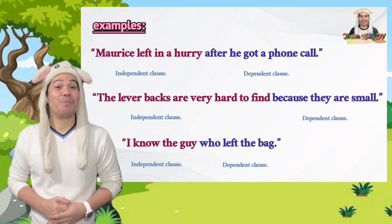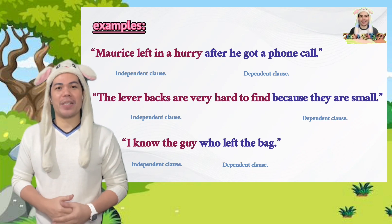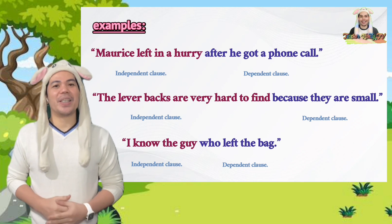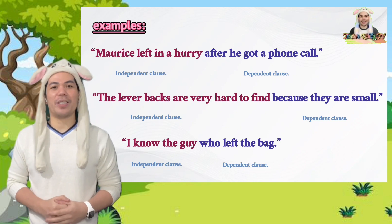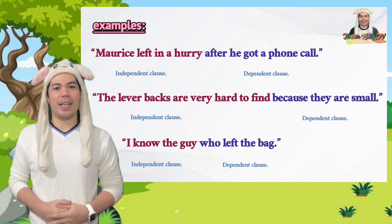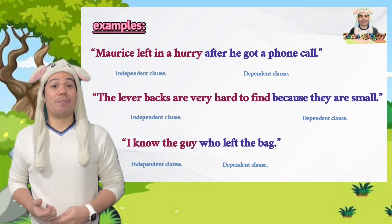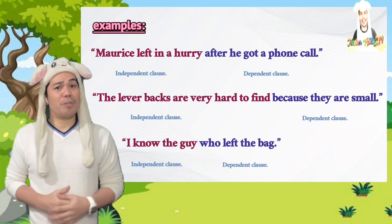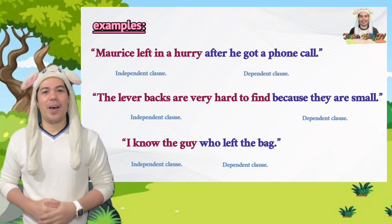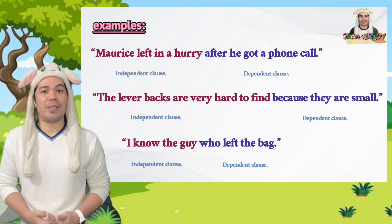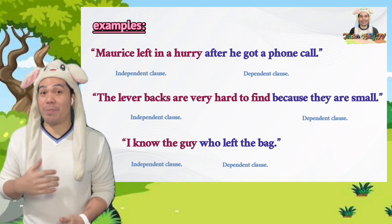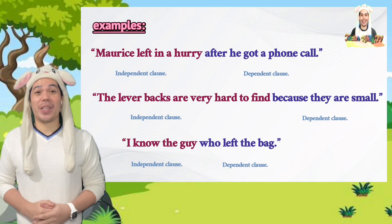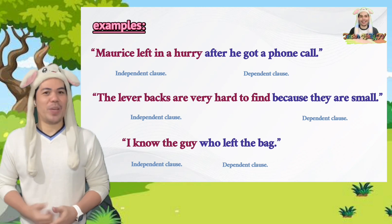"Maurice left in a hurry after he got a phone call." "The lever bags are very hard to find because they are small." "I know the guy who left the bag." In these sentences, we see independent clauses which can make sense on their own, and dependent clauses — "after he got a phone call," "because they are small," and "who left the bag" — which don't make sense on their own. It is very important to know that we use commas when the dependent clause comes first, but if the sentence begins with the independent clause followed by the dependent clause, then we don't use a comma.